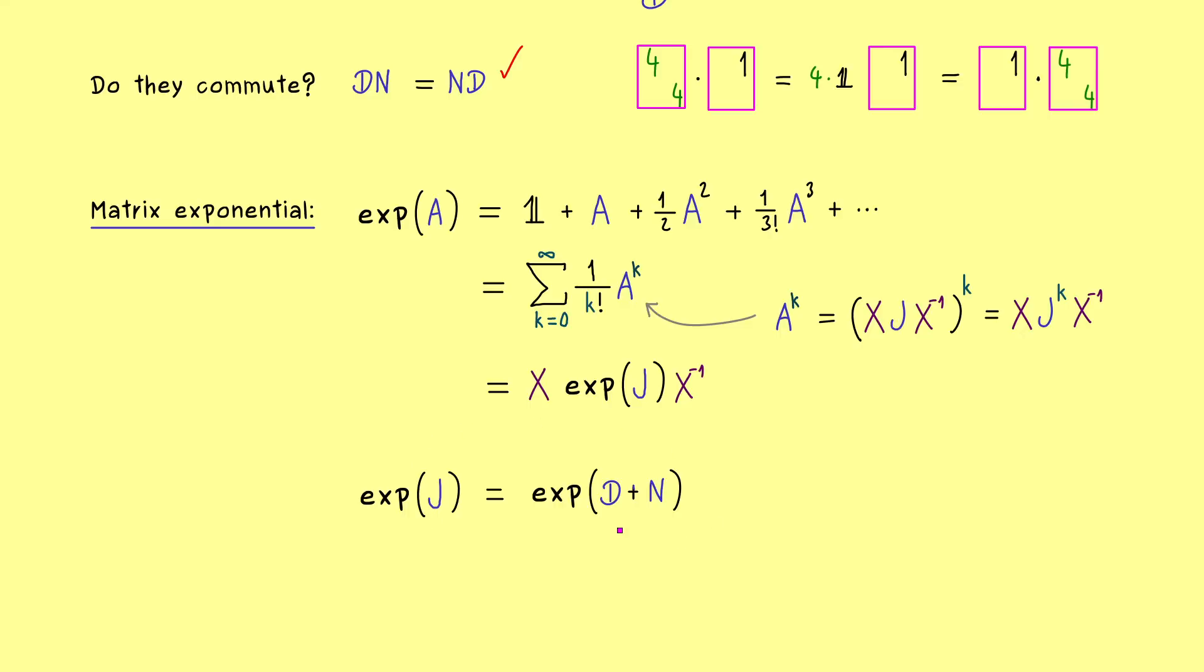However, the thing is that this fundamental rule of the exponential function only holds if the components commute. In fact, you can check my real analysis course to check that the proof requires that the real numbers commute. However, now the good thing is that D and N also commute, so we can do the proof like in the real numbers and get our identity.